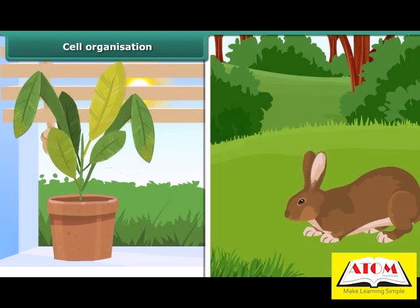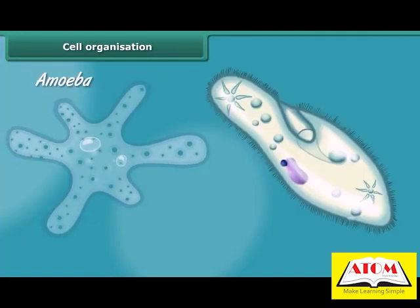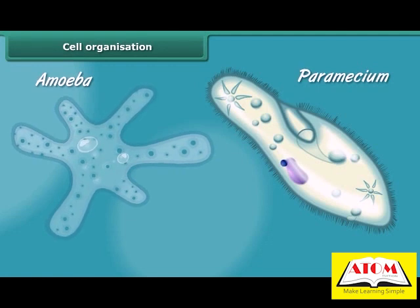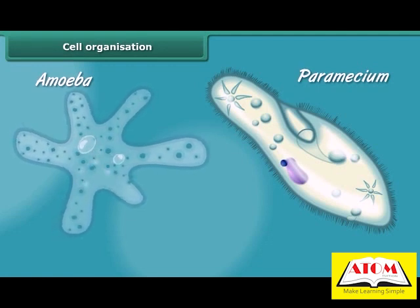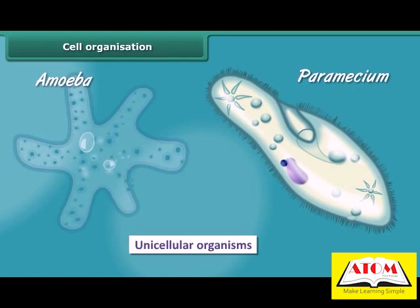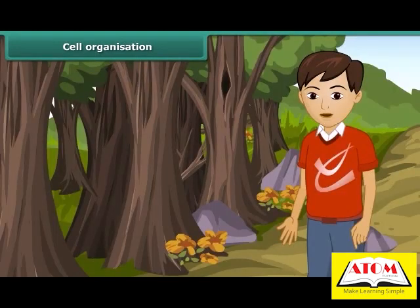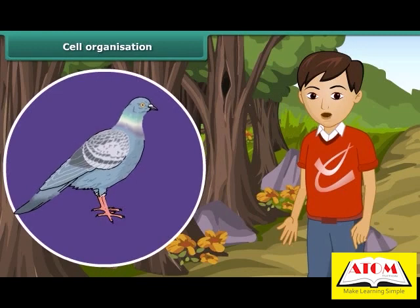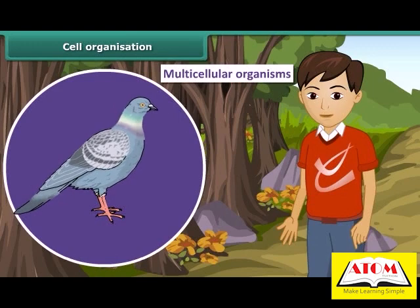They may be unicellular or multicellular depending on the number of cells in their body. Small organisms like amoeba and paramecium are made up of one cell — they are called unicellular organisms. Human beings, pigeons, and mango trees are made up of many cells, so they are called multicellular organisms.